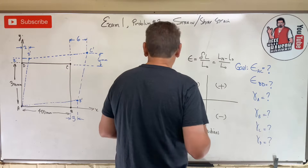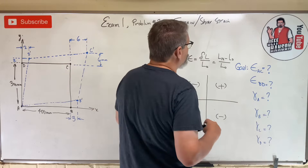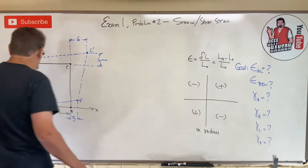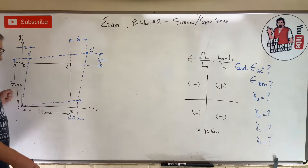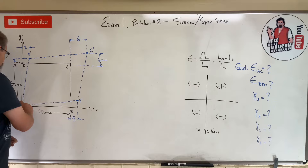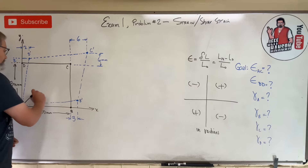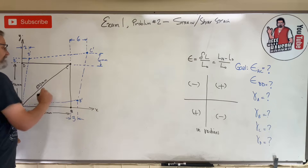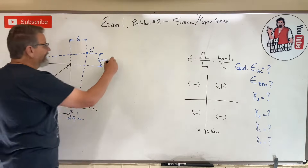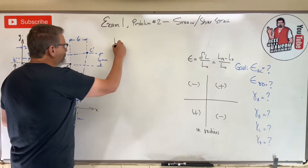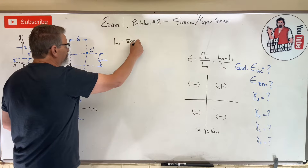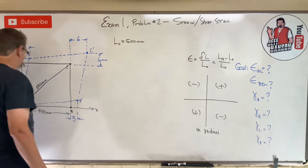Let's start with the diagonals, corner to corner. Here's a little secret: if one side is 300 and the other is 400, then the diagonal — by the Pythagorean theorem — must be 500 millimeters. So the original length of line AC is 500 mm.